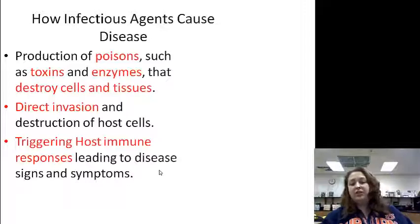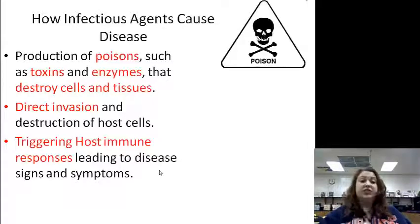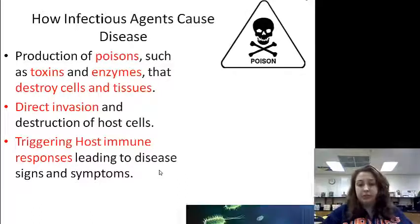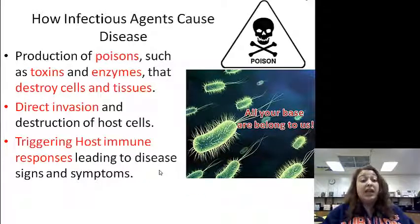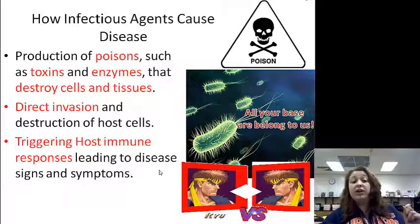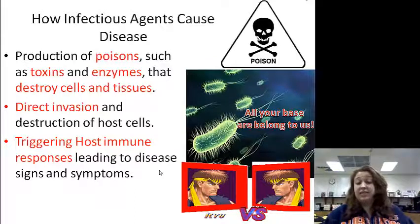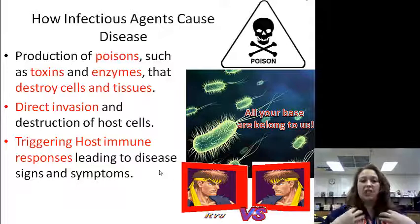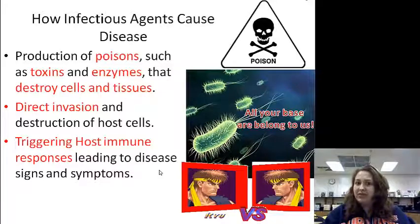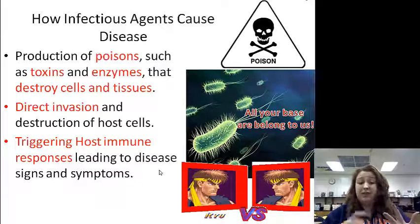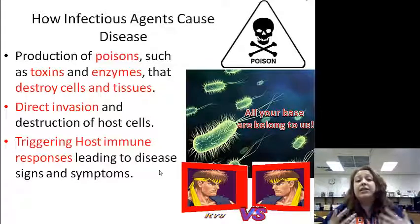How infectious agents cause disease: first, they can produce poisons such as toxins and enzymes that go throughout your body and destroy your cells and tissues. Second, you can have a direct invasion and destruction of the host cells. Third, they can trigger an immune response leading to signs and symptoms of disease — meaning it causes your own body to fight against itself. You may have heard this as an autoimmune disease: auto meaning self, immune meaning the immune response. Some bacteria can cause your body to do that.